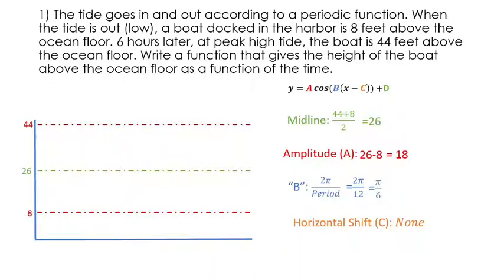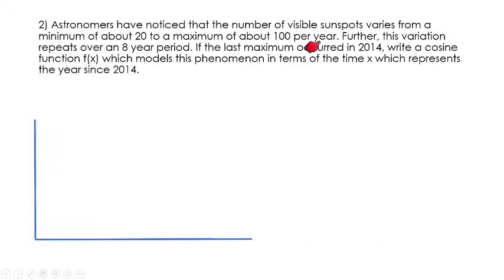In our next one, it says astronomers have noticed that the number of visible sunspots varies from a minimum of about 20 to a maximum of about 100 per year. Further, this variation repeats over an eight-year period. If the last maximum occurred at 2014, write a cosine function which models the phenomenon in terms of the time x, which is the years since 2014.